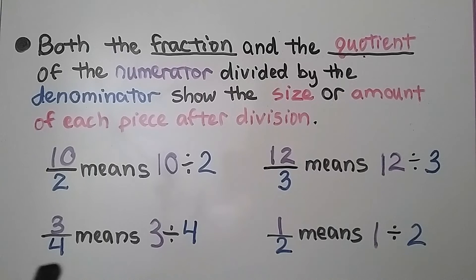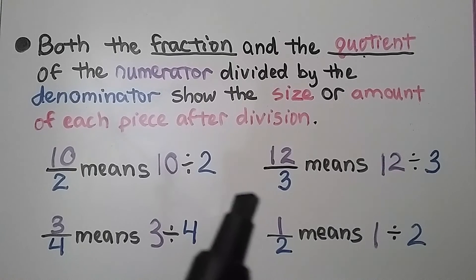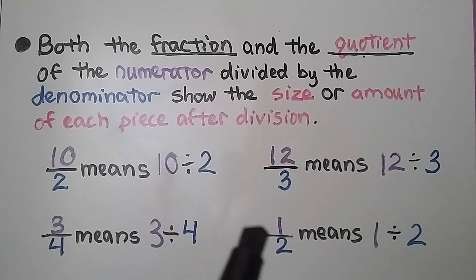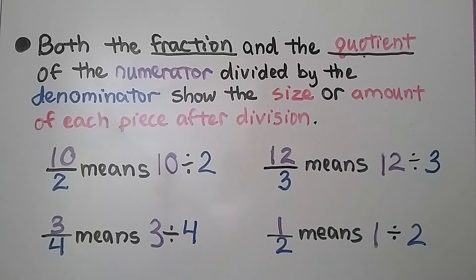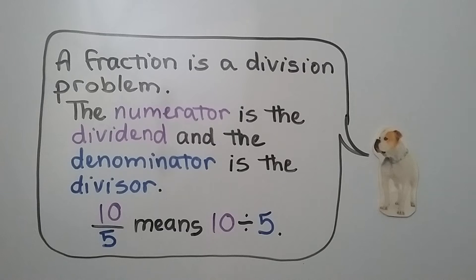3 fourths means 3 divided by 4. 12 thirds means 12 divided by 3. And 1 half means 1 divided by 2. So a fraction is a division problem — the numerator is the dividend and the denominator is the divisor. 10 fifths means 10 divided by 5.